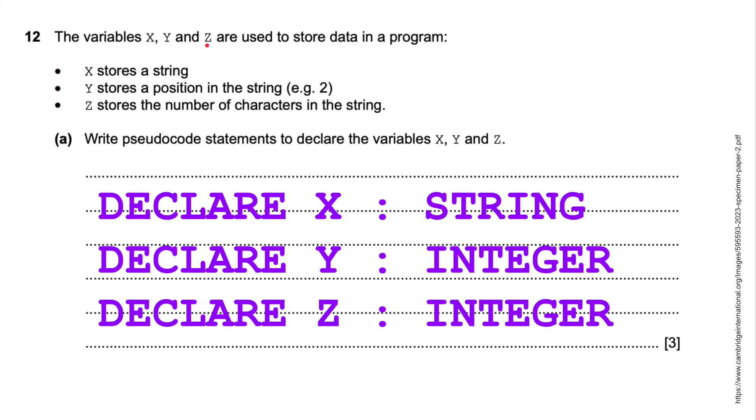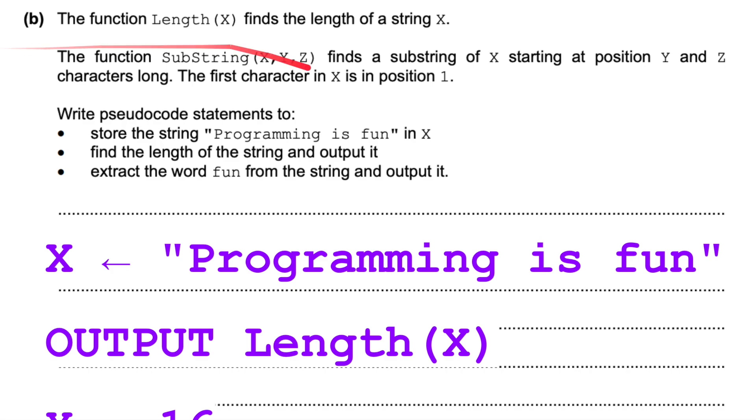Now, the variables x, y, and z are used to store data in a program. X stores a string. Y stores a position in the string. And z stores a number of characters in the string. Write pseudocode declare... This sounds very difficult. This sounds rather complicated. But basically, write pseudocode statements to declare the variables x, y, and z. We're going to declare x as a string. That's all it means. Declare y as an integer because it's a number. And we're talking number of characters in the string. So z would be declared as an integer as well. Declare z as. So, learn, do a little bit of revision on declaring in terms of pseudocode.